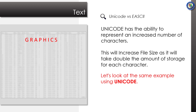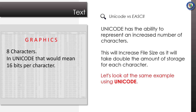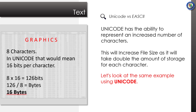Let us look at the same example using Unicode. Again, we will calculate the storage requirements of the word 'graphics'. It has 8 characters, and in Unicode that would mean 16 bits per character. That would give us 8 times 16, being 128 bits. If we divide that by 8 to convert to bytes, we get 16 bytes — double the amount of storage of extended ASCII.